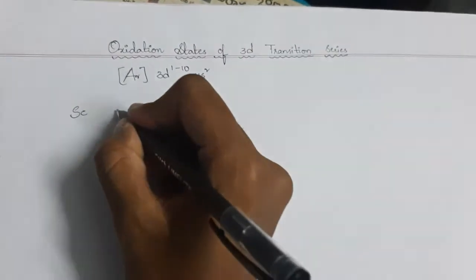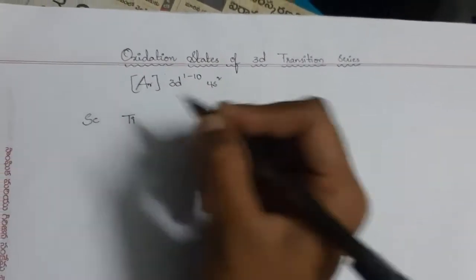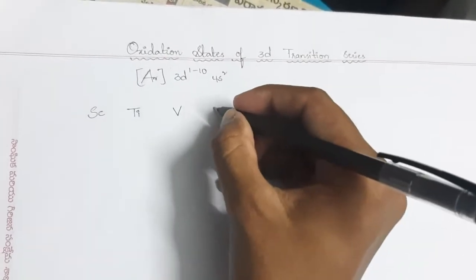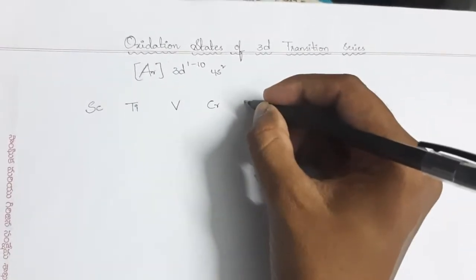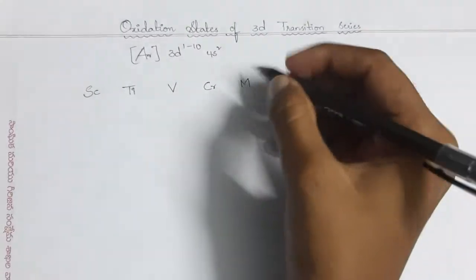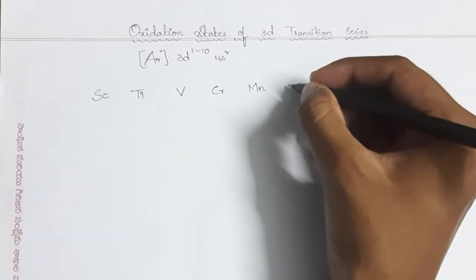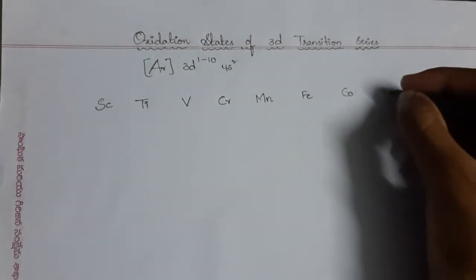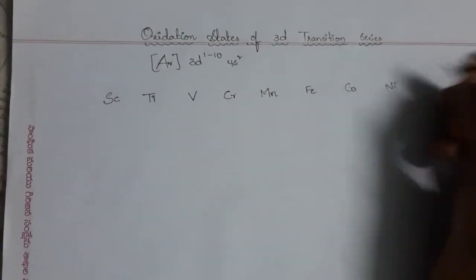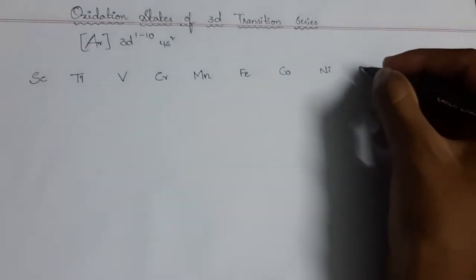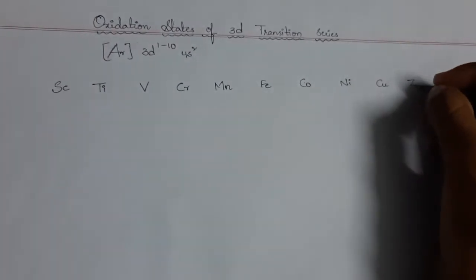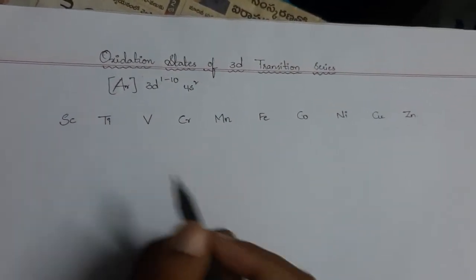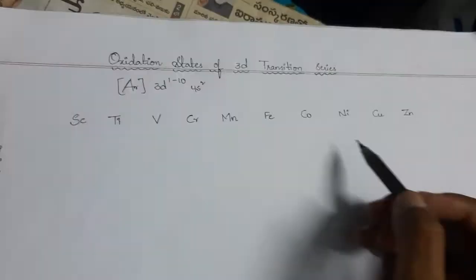The elements in the 3d series are: scandium, titanium, vanadium, chromium, manganese, iron, cobalt, nickel, copper, and zinc. Now we can write the electronic configurations of these elements, which makes it easier to understand their oxidation states.